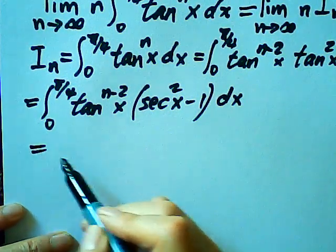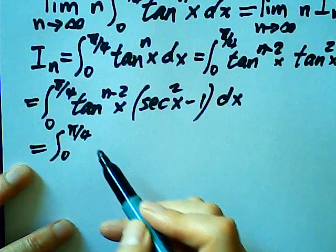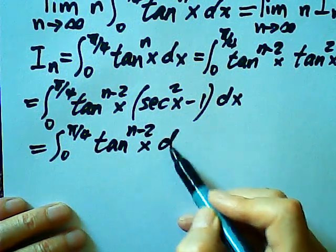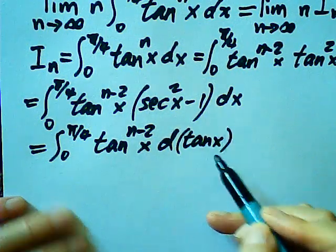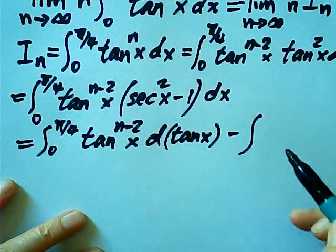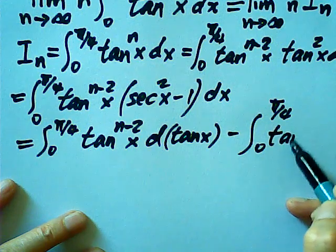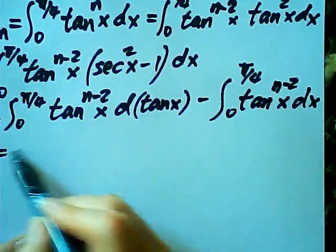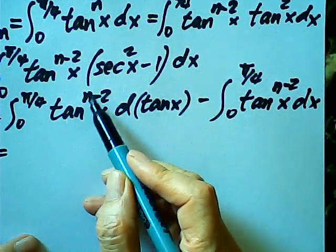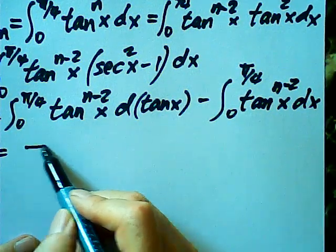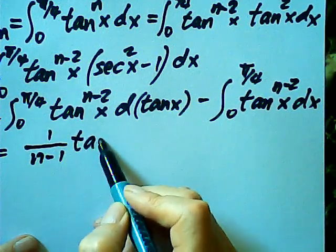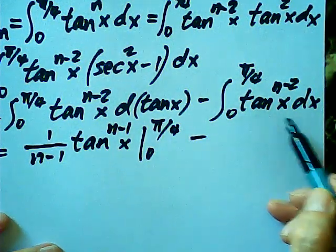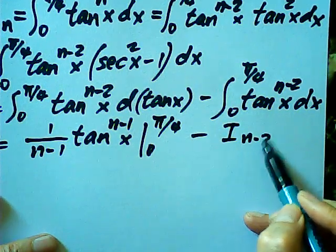So this equals the integral from zero to quarter pi of tangent^(n-2)(x) times secant²(x) dx, minus the integral from zero to quarter pi of tangent^(n-2)(x) dx. The first integral is easy — it's just a power function, something^(n-2) d(something), which equals 1/(n-1) times tangent^(n-1)(x) evaluated from 0 to quarter pi. The second part is simply I sub (n-2).